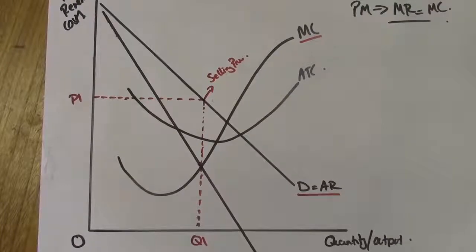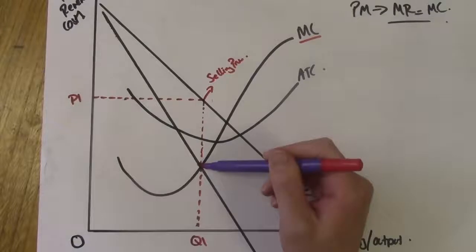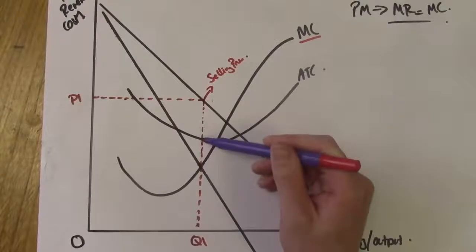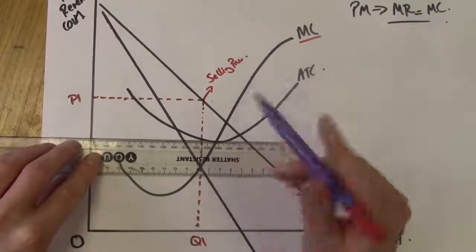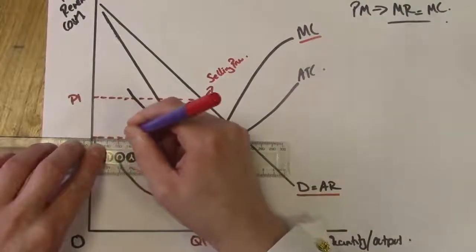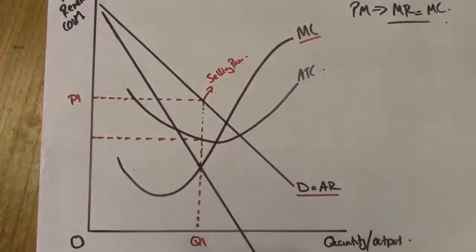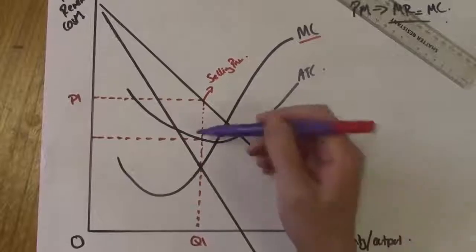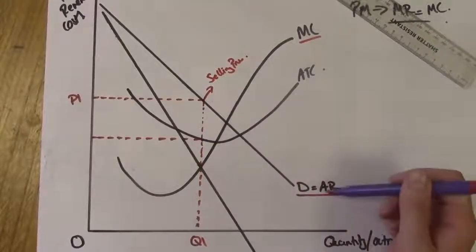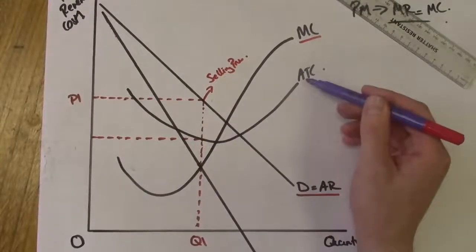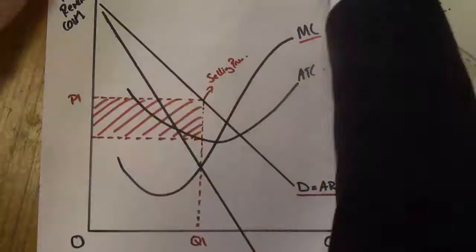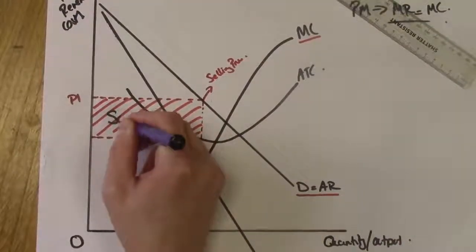So how on this diagram now do we show the level of supernormal profit? From your profit maximizing level of output, where MC equals MR, which is this point here, you still have a dashed line up to the selling price. From this point, MR equals MC, move up until you cover your costs. Remember, we need to cover our costs before we make a profit. So once we hit this point here, do a dashed line across here, and this area here is our area of supernormal profit. We've covered our costs. Revenue, average revenue, is greater than average costs. So this area here in red is our area of supernormal profit.